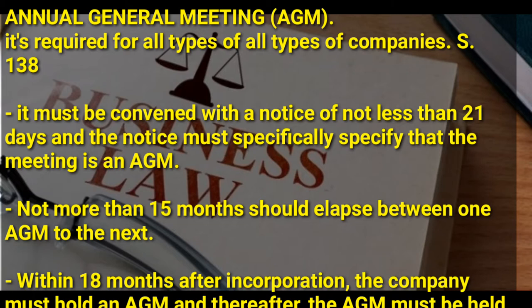The AGM is required for all types of companies, including public companies, under section 138 of the Companies Act. The Annual General Meeting must be convened with a notice of not less than 21 days, and the notice must specify that the meeting is an Annual General Meeting. Not more than 15 months should elapse between one Annual General Meeting and the next. Within 18 months after incorporation the company must hold an Annual General Meeting, and thereafter it must be held every year.